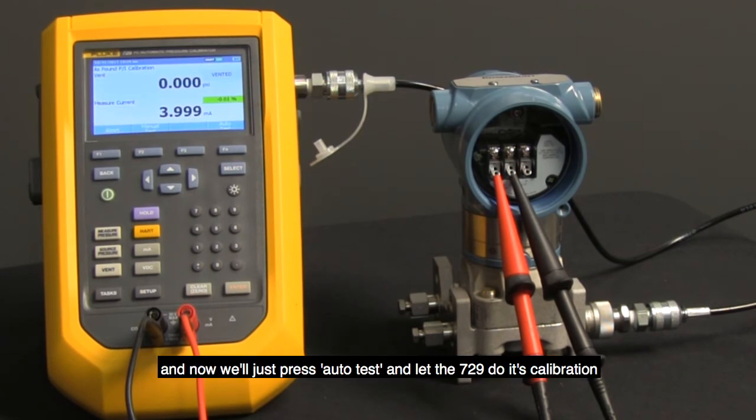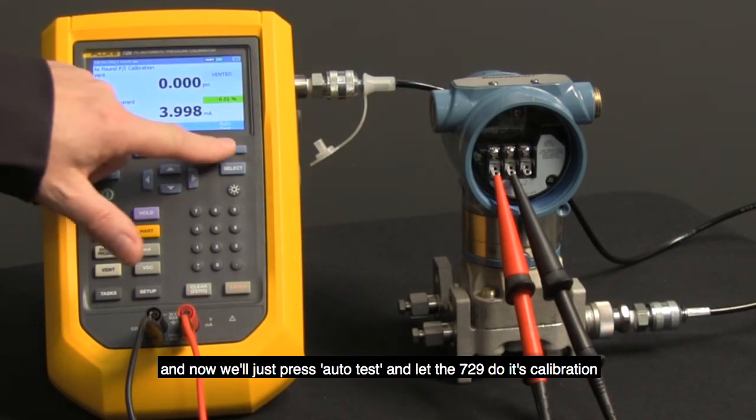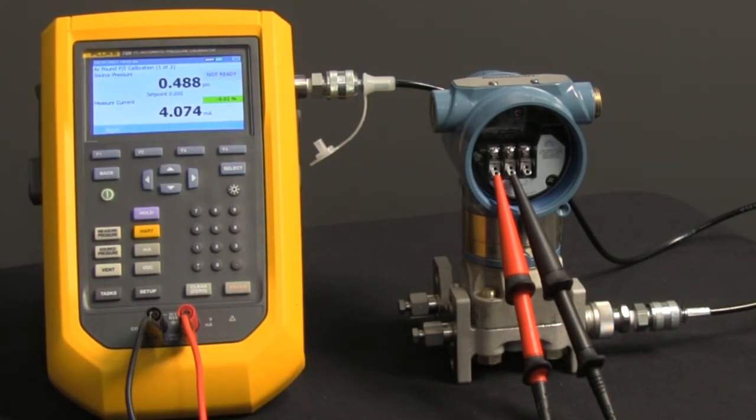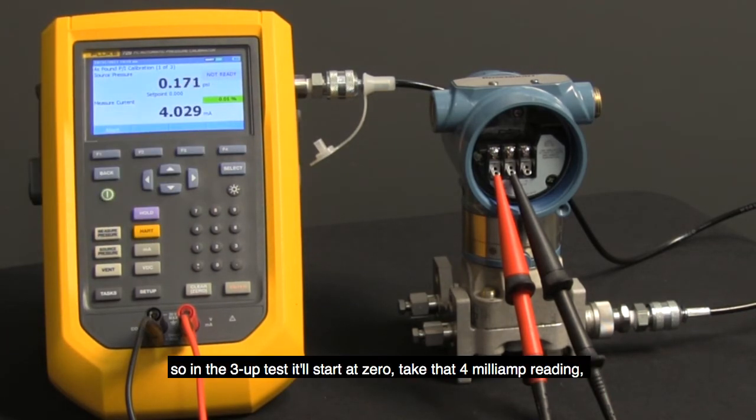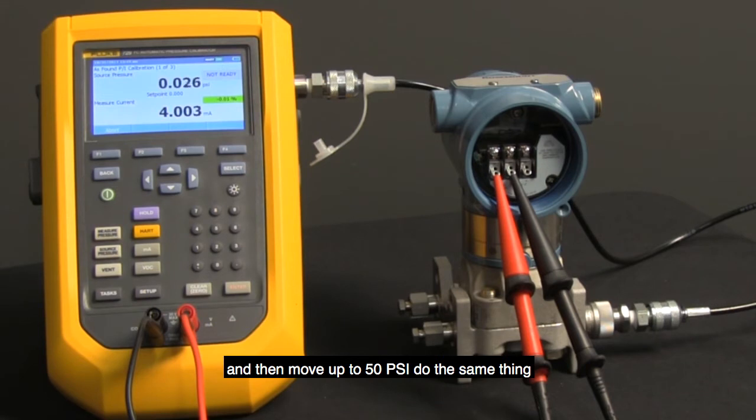And now we'll just press auto test and let the 729 do its calibration. So in the three up test, it'll start at zero, take that four milliamp reading, and then move up to 50 PSI and do the same thing.